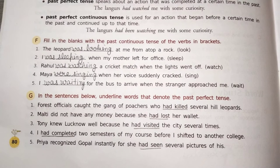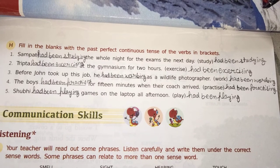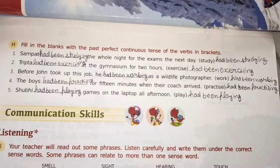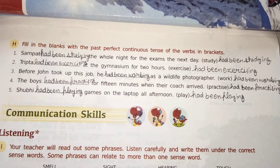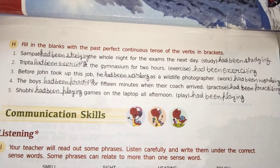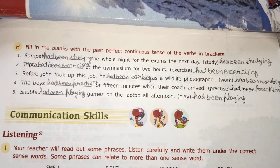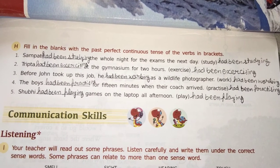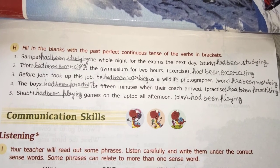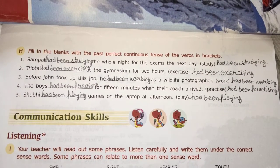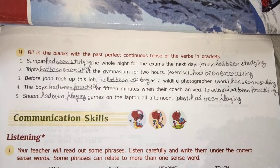This is Exercise H part — past perfect continuous tense. First: had been studying. Second: had been exercising. Third: had been walking. Fourth: had been practicing. Fifth: had been playing. There are also blanks to fill in.